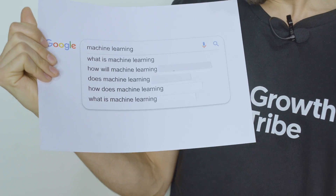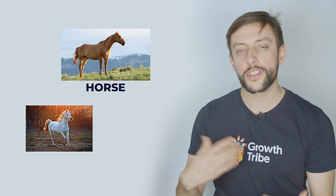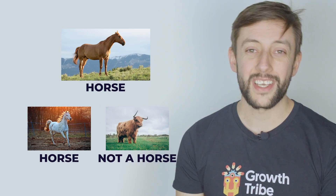Alright, first question: What is machine learning? Think about this — when you have a kid and you want to teach this kid to recognize a certain pattern, for example, an animal. You can show a picture of a horse and every time you show him a horse you can say 'this is a horse.' Over time this kid will be able to recognize horses. It's the same with computers.